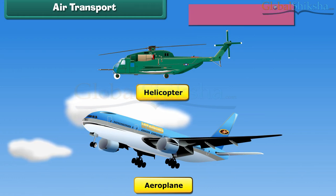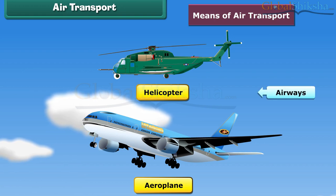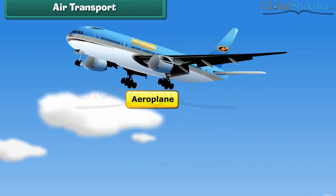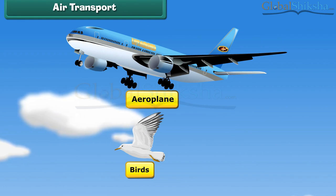You might have seen helicopters and airplanes in the sky. These are the means of air transport. These run through airways. These vehicles have wings like birds that help them to fly in air.